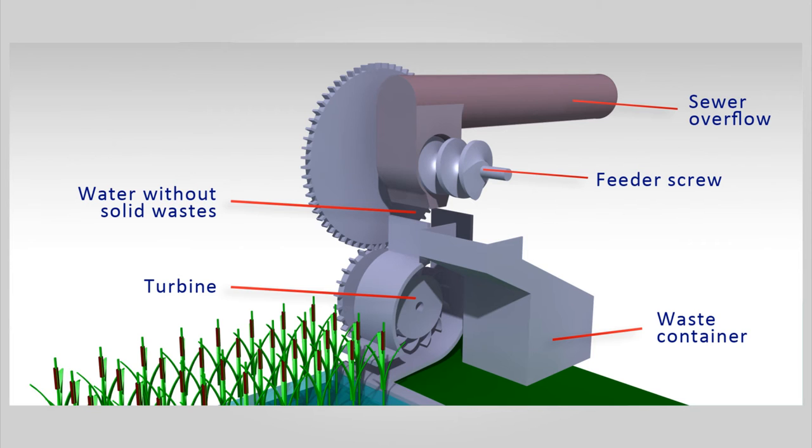In a fast time, the solid bodies are separated from the water by a filter and evacuated with a feeder screw. The water falls on a turbine which allows the motion of the feeder screw.